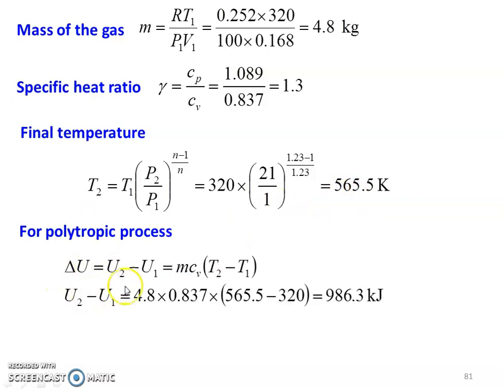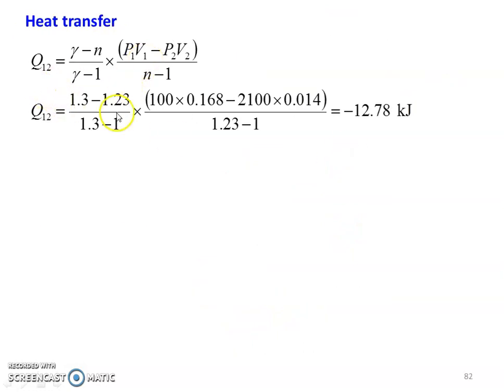For polytropic process, delta U equal to U2 minus U1, which is M Cv into T2 minus T1. So M equal to 4.8 into Cv equal to 0.837 into 565.5 minus 320 equal to 986.3 kilojoules. Then, heat transfer for the polytropic process Q12 equal to gamma minus N by gamma minus 1 into P1V1 minus P2V2 divided by N minus 1. Substituting numerical values: 1.3 minus 1.23 divided by 1.3 minus 1 into 100 into 0.168 minus 21000 into 0.014 divided by 1.23 minus 1. Calculating the heat transfer is minus 12.78 kilojoules. Heat is rejected.